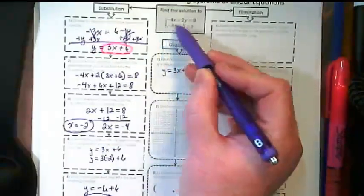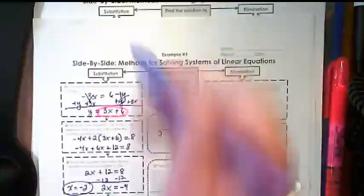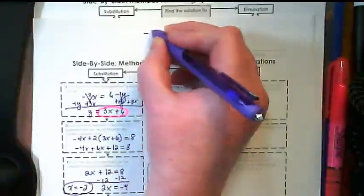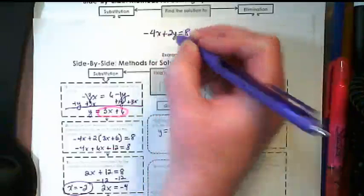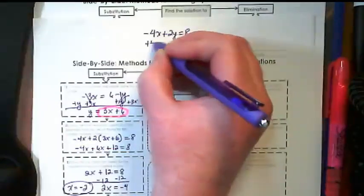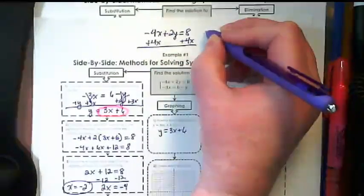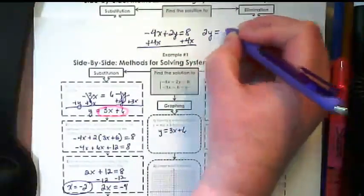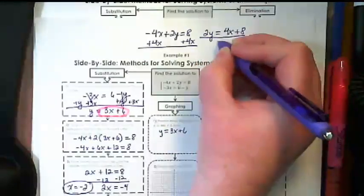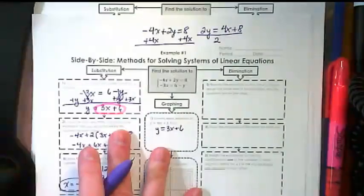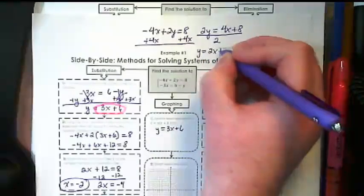We need to also do it with this one. I'm going to use some of the extra space at the top of the paper just to rewrite it. We end up right now with 2y is equal to 4x plus 8. If we divide everything by 2 there, we get y is equal to 2x plus 4.